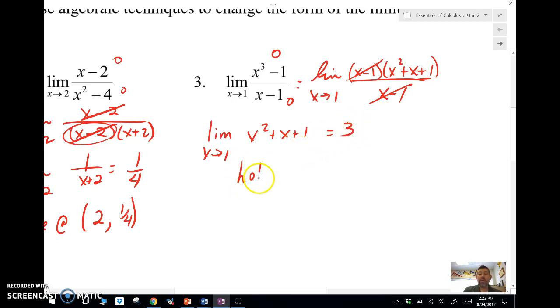I'm going to simplify that, limit as X approaches one of X squared plus X plus one. Plug that guy in and I get three. And what do we know? We know there's a hole at one comma three.